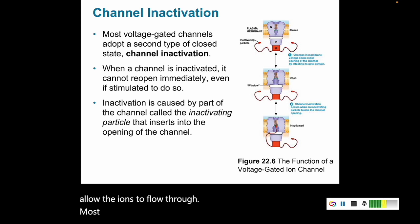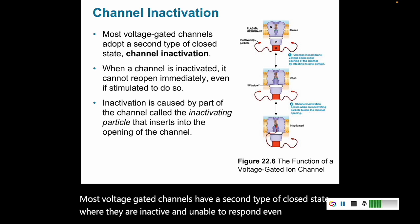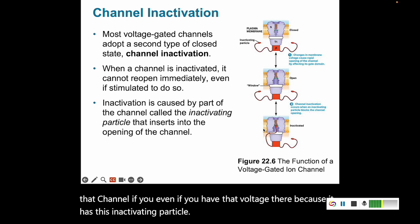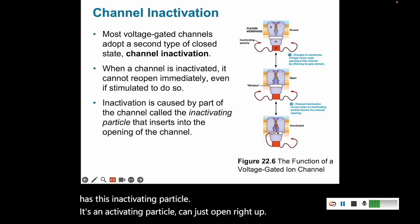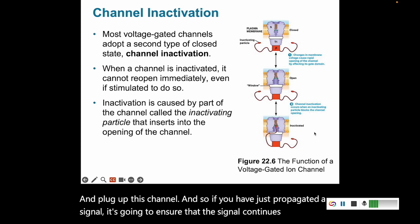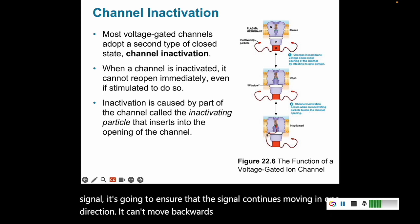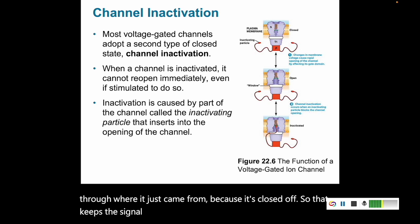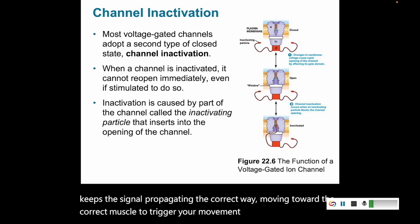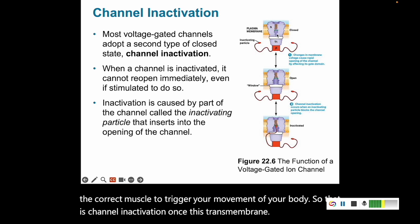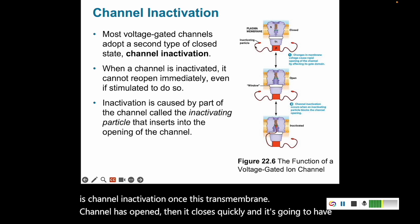Most voltage-gated channels have a second type of closed state where they are inactive and unable to respond, even if the voltage is present, because of an inactivating particle that can plug up the channel. If you have just propagated a signal, this ensures it continues moving in one direction — it cannot move backwards through where it just came from. That keeps the signal propagating correctly toward the target muscle. Once the channel has opened, it closes quickly and has a period of rest where it cannot open again.